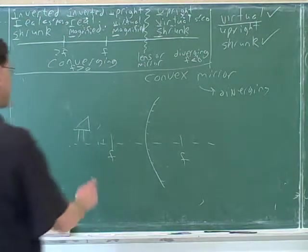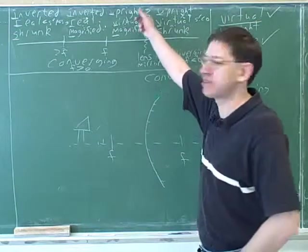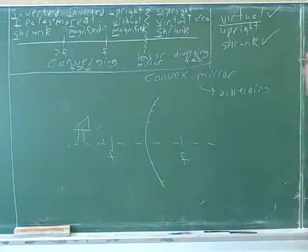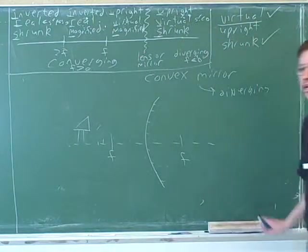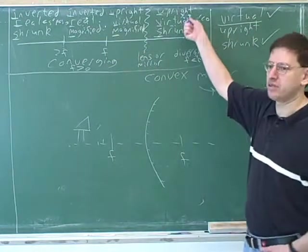The first ray comes in parallel to the axis. Oh, I guess before we did anything, we should have used our table. So what's the table tell us? Since it's diverging, that means that it's upright, virtual, and sharp. This is kind of the same case that we did before.